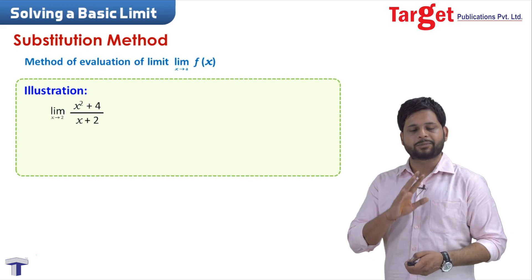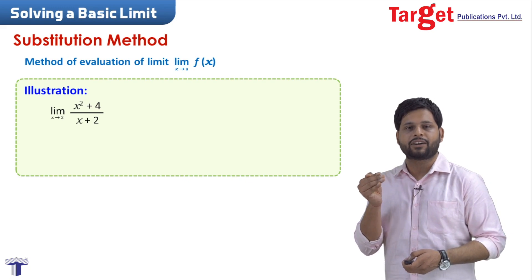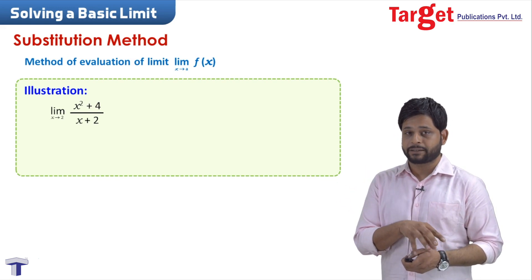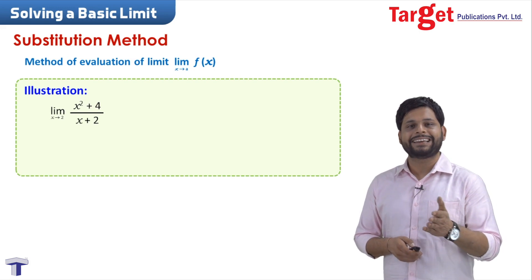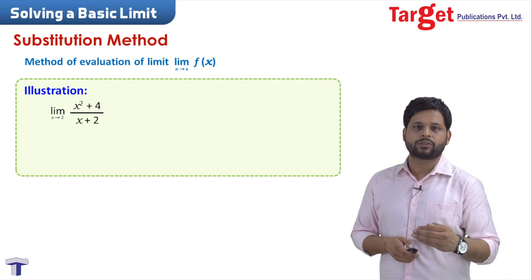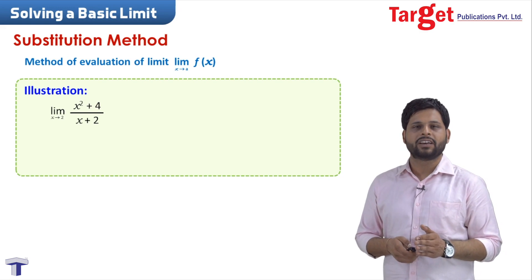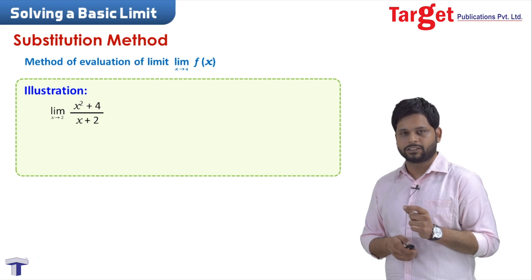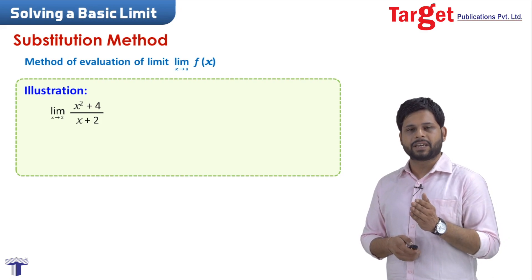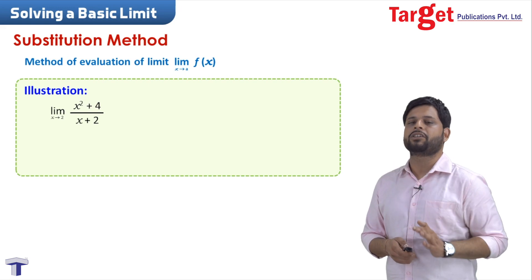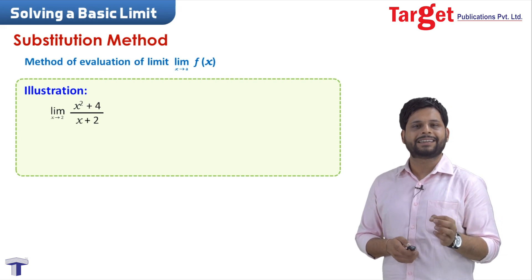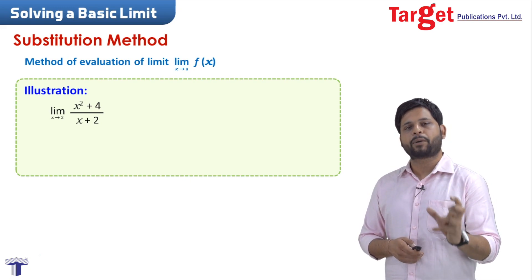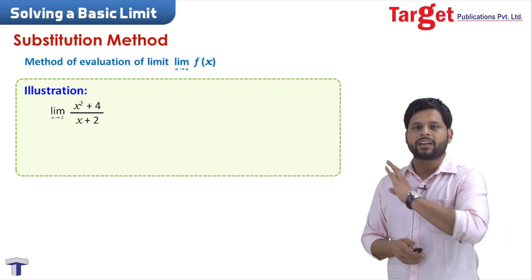What we are doing is we are not going to substitute a number very close to 2, like 1.9999 or 2.0001. We will be taking the same number that x is approaching and substitute that number in the function, because 1.9999 is very close to 2, so we take the approximate value and substitute it.